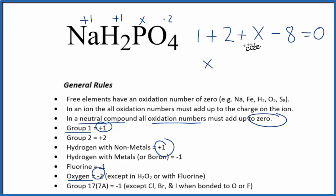So we have x minus five equals zero. Add five to both sides. x equals a positive five. So the oxidation number on the phosphorus here in NaH2PO4, that's going to be positive five.